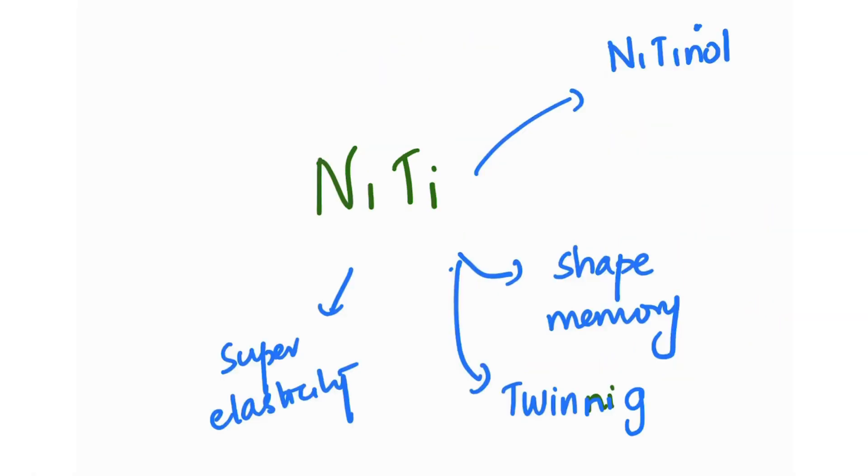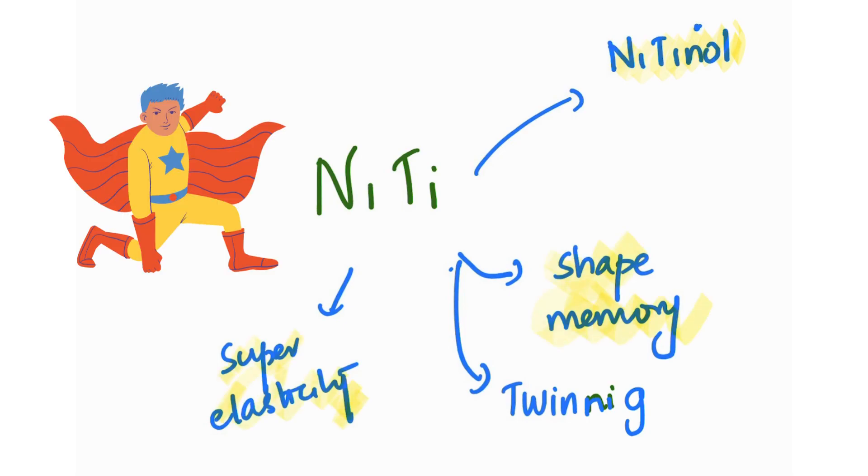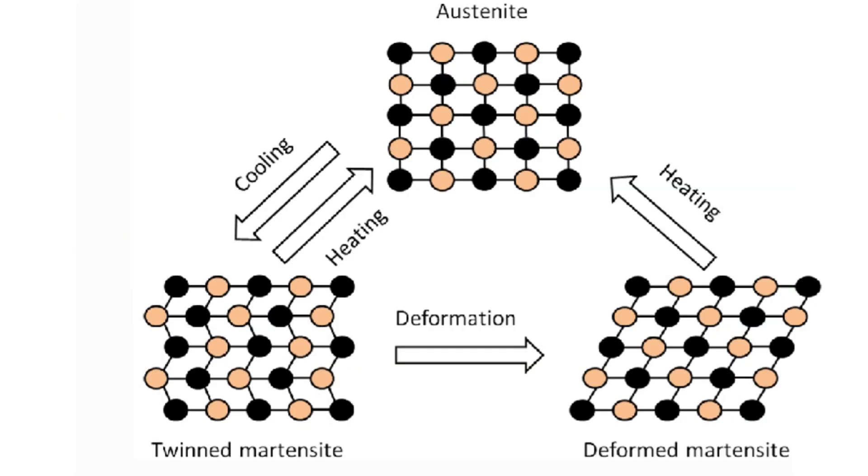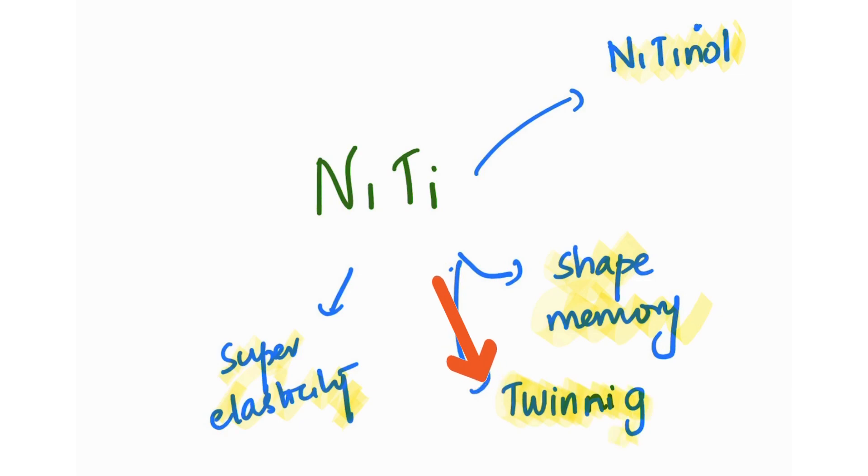Next is nickel titanium, which is also called nitinol. Nitinol has shape memory as well as super elasticity. It has these properties because it translates between austenitic and martensitic phases, and this occurs by a process called twinning.